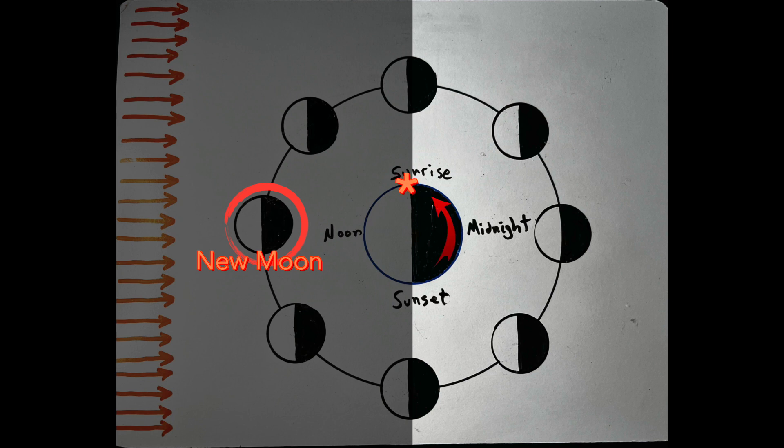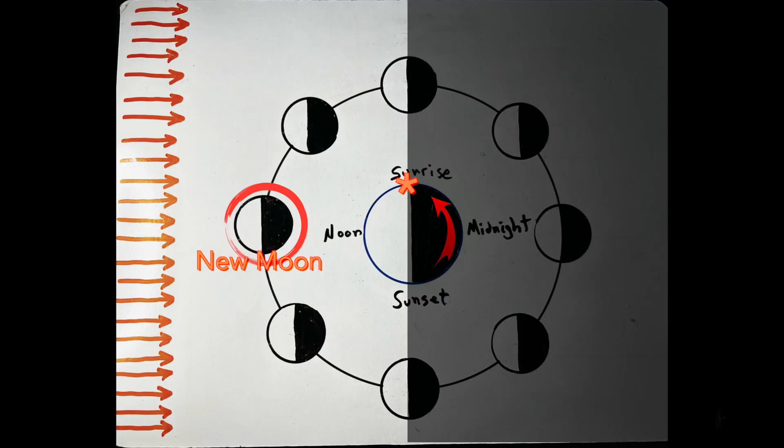When they rotate onto the half of the Earth facing the moon. And now I've shaded in everything you cannot see from the day side of the Earth. The new moon will then be highest in the sky at noon. And then people on the day side of Earth will lose sight of it at sunset.